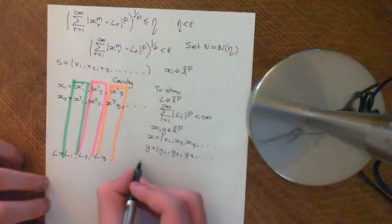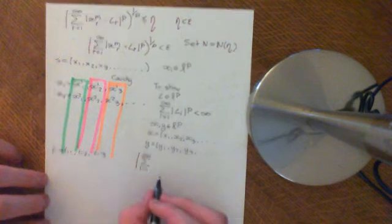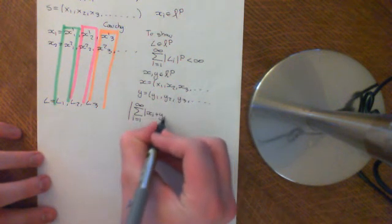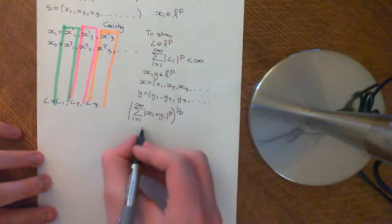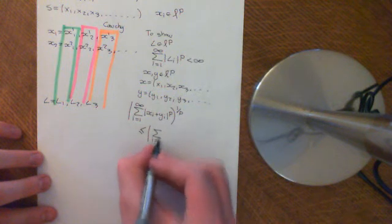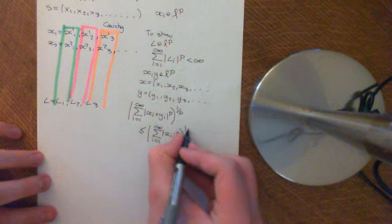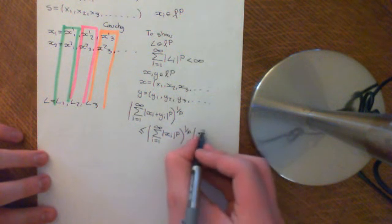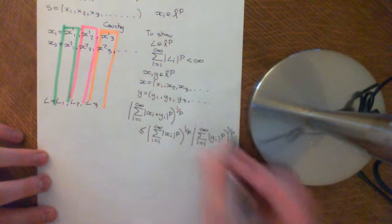Then the sum from i equal to 1 to infinity of the modulus of xi plus yi to the power of p, all to the power of 1 over p, is going to be less than or equal to the sum of modulus of xi to the power of p, all to the power of 1 over p, plus the sum of modulus of yi to the power of p, all to the power of 1 over p.